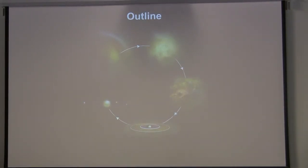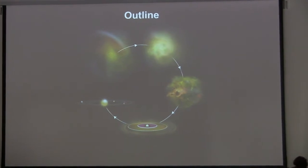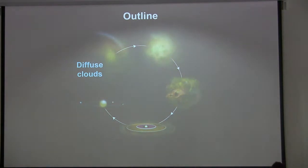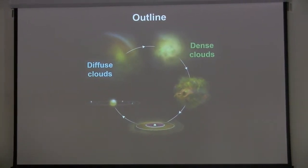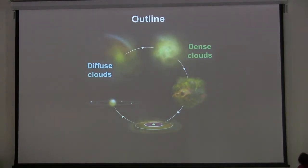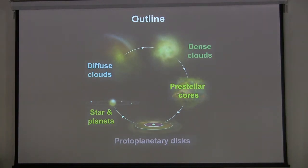I'm going to be talking about the modern universe today — gas that's been cycled through population three and population two stars. I'll start by talking about diffuse clouds, which are gravitationally held together, and some of them can go on to form stars. Those that do condense become dense clouds, where they're now fully molecular. Inside dense clouds there are cores that are starting to gravitationally collapse, giving us the pre-stellar cores. Stars will form, and the material left over forms a protoplanetary disk. Eventually the star blows away the excess material of the disk, and we're left with the star and planets.